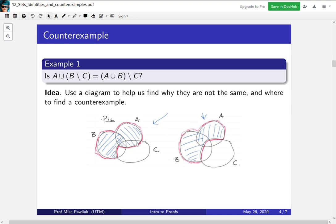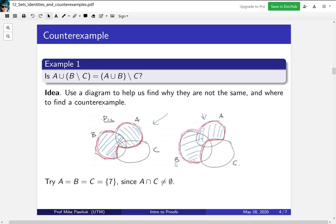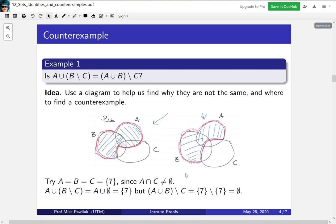So for us we're looking for sets A, B and C where there's something here. Put another way, we're looking for a spot where A intersect C is not empty. So the simplest possible case I could think of is let them all be the set {7}. And because this part, A intersect C, is not empty, it'll show that these two are different. So if you compute the set on the left, you get just {7}. But if you compute the set on the right, you end up with the empty set.